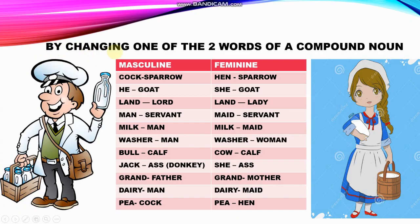The next type is forming the feminine by changing one of the two words in a compound noun. For example, cockSparrow becomes hensparrow — cock is replaced by hen. He-goat becomes she-goat. Landlord becomes landlady — lord is changed to lady. Man-servant becomes maid-servant. Milkman becomes milkmaid. Washerman becomes washerwoman. Bull-calf becomes cow-calf. Jackass becomes she-ass. Grandfather becomes grandmother. Dairyman becomes dairymaid. Peacock becomes peahen — cock is replaced by hen.